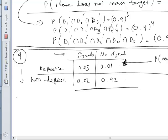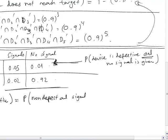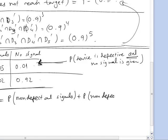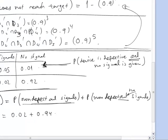Question B asks: what is the probability that the device is not defective? The device can be non-defective and signal, or non-defective and not signal — there is nothing in between. So we add the probabilities that the device is non-defective and signals, and the probability that the device is non-defective and does not signal. The first element of the second row is 0.02, and together this gives us 0.94.